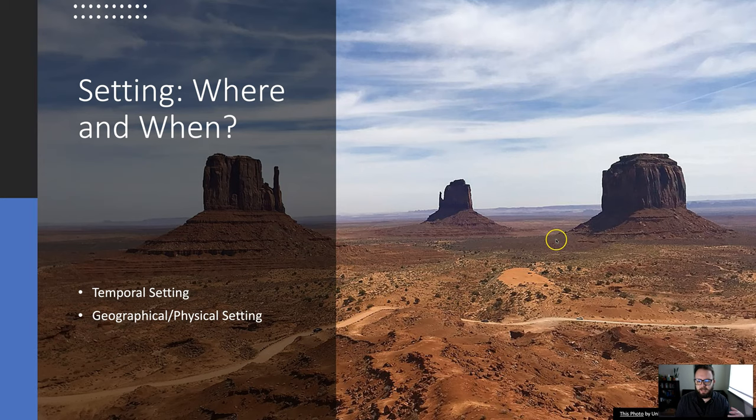Is it set in a particular time period? Is it set, as we have here with our photo of Monument Valley, in the Old West? Or is it set somewhere in the future on an alien planet? Maybe someplace that doesn't actually exist? These are temporal settings and they're tied very closely, as you can see, with geographical or physical settings. This is the where.